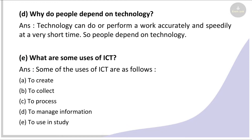Next question: why do people depend on technology? People depend on technology because technology can perform our work accurately and speedily in a very short time.